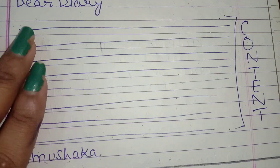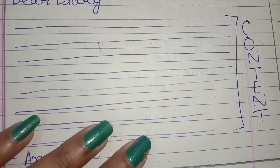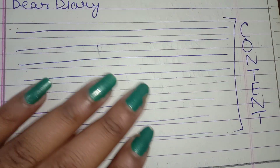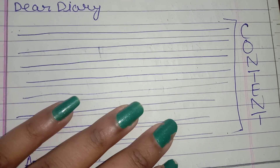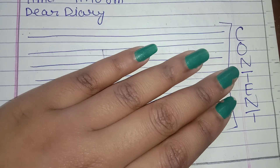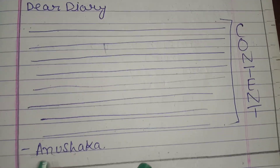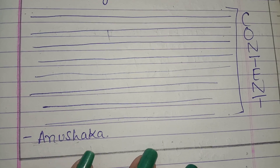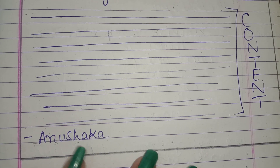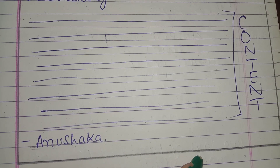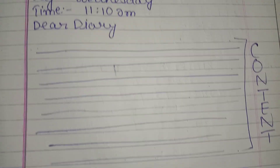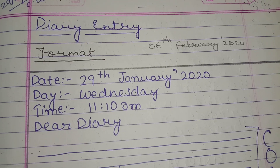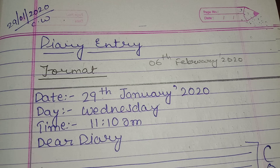After the salutation, you have to write your content. After that, you have to write your name — for example, my name is Anushika, so I have written my name here. Then you close the box with a ruler and pencil. So this format is really very, very easy and you will attempt it with ease.